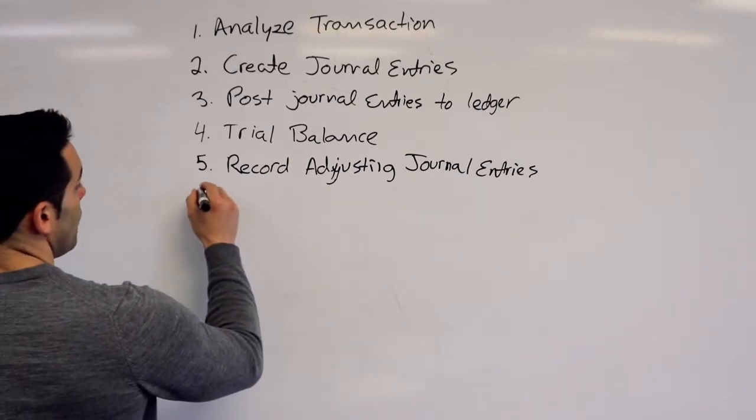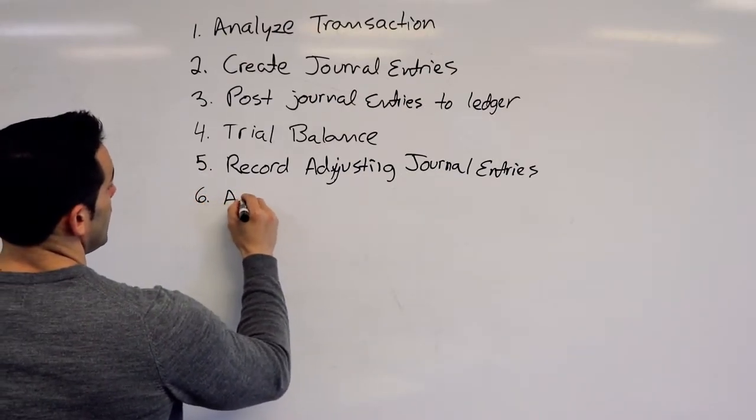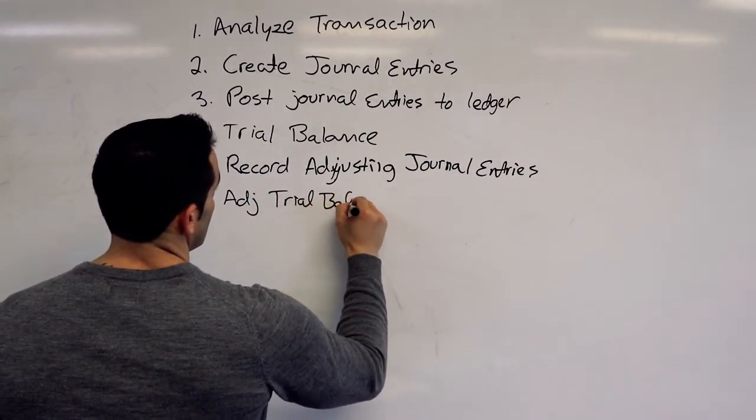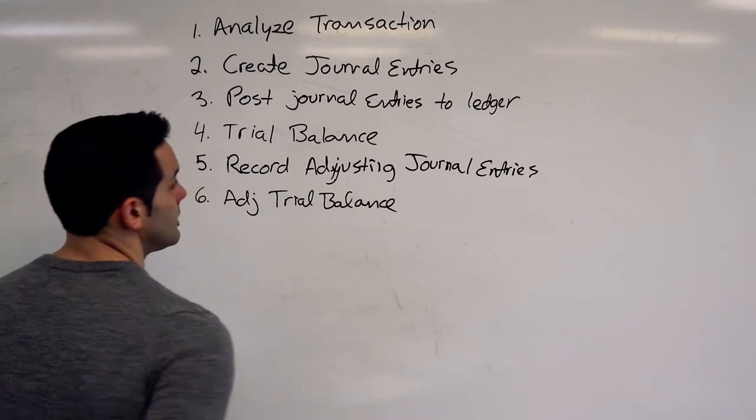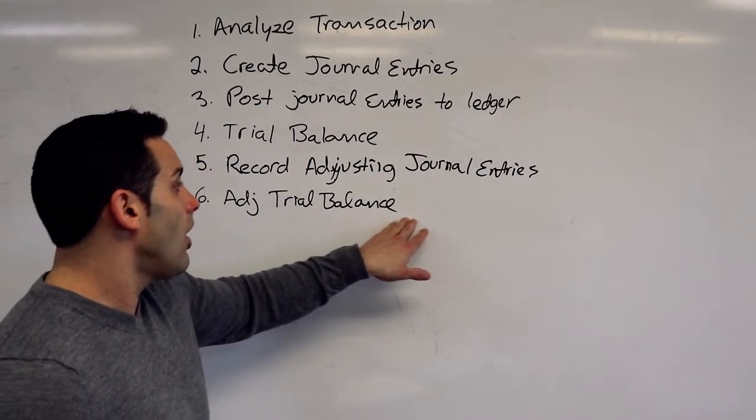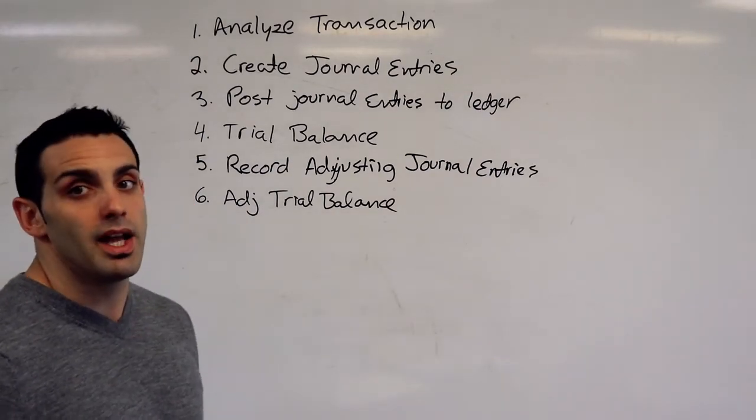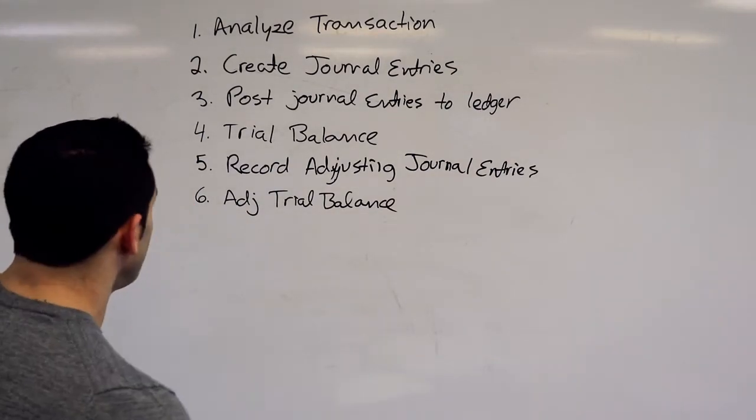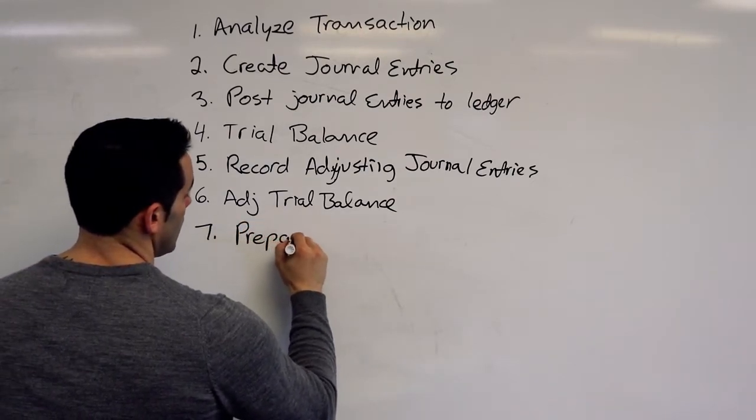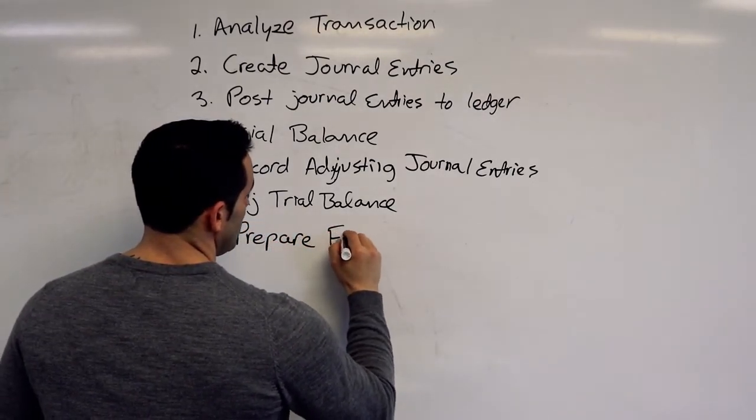And again, we're going to run an adjusted trial balance. Once again, we made entries. So we're going to make sure that all our debits and credits are still in balance. And from here we can prepare our financial statements.